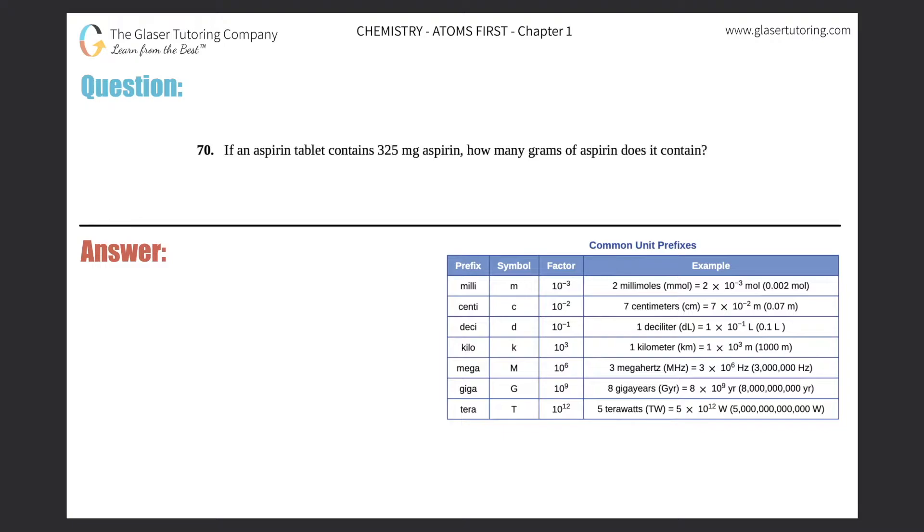Number 70. If an aspirin tablet contains 325 milligrams of aspirin, how many grams of aspirin does it contain?